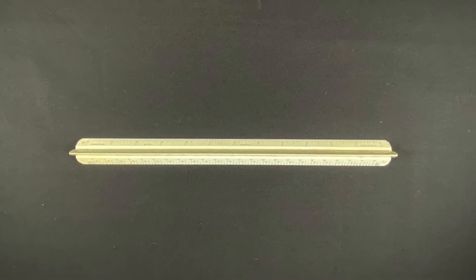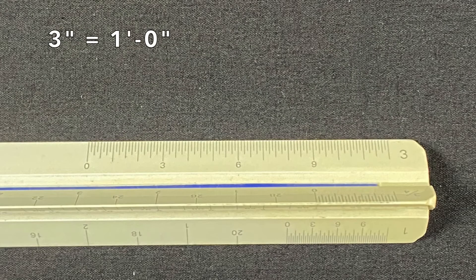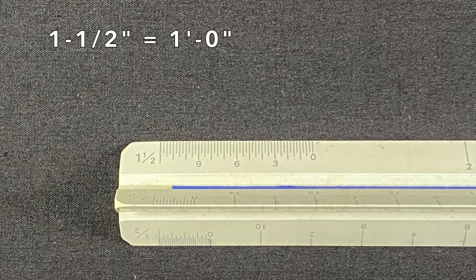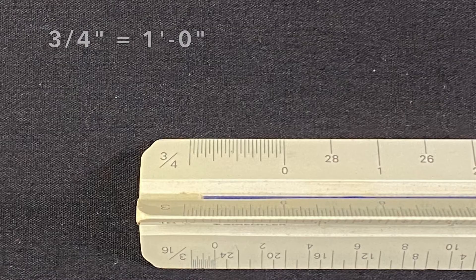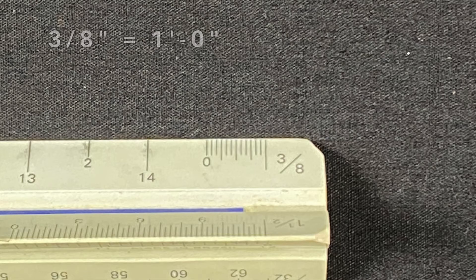Let's shrink down a 12 inch ruler so that three inches equals a foot, an inch and a half equals a foot, an inch equals a foot, three quarters, half inch, three eighths of an inch.